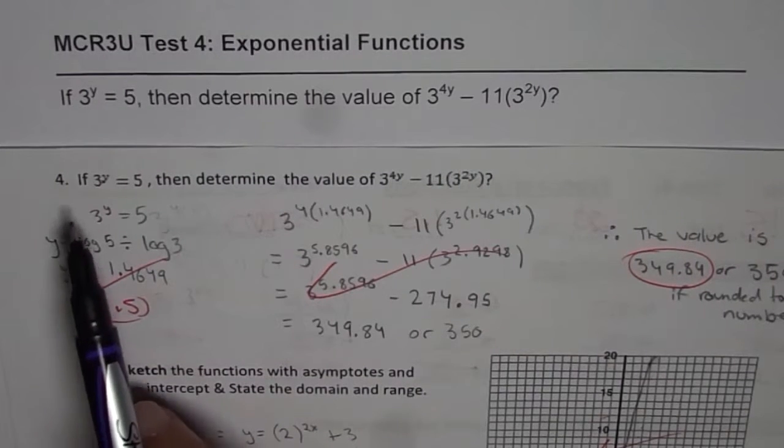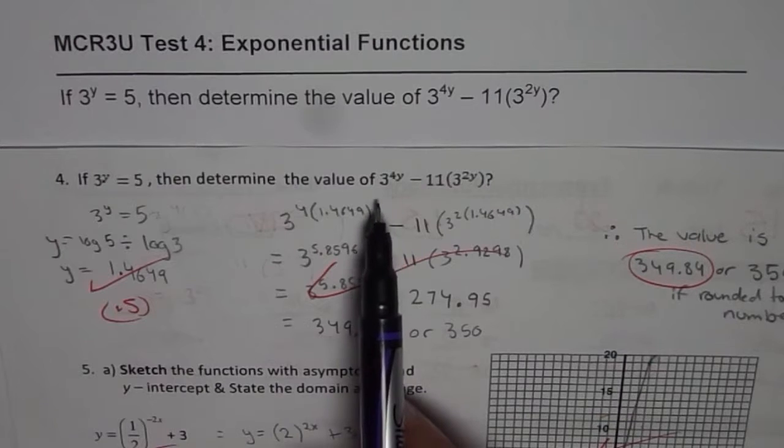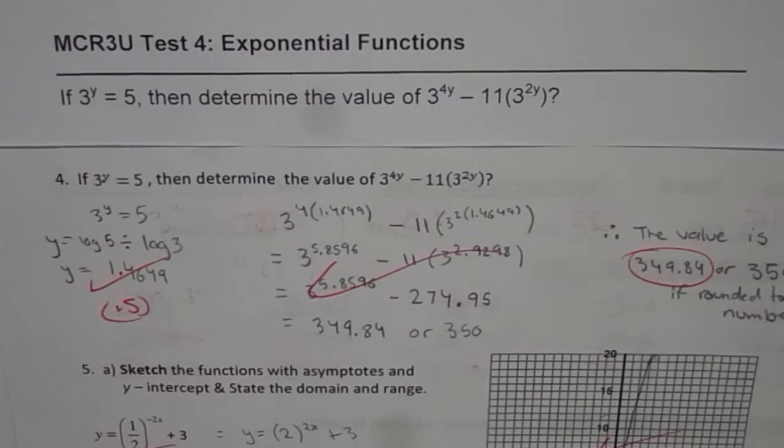The question is if 3 to the power of y equals 5 then determine the value of 3 to the power of 4y minus 11 times 3 to the power of 2y.